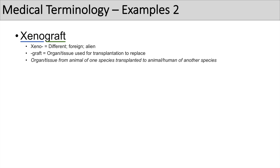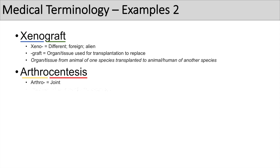Xenograft is just one type of graft. An autograft is when you transplant tissue from the same person, and an allograft is when you transplant tissue from one person to another person. The next word is arthrocentesis. Breaking it down: 'arthro' means joint, and 'centesis' means removal of fluid or aspiration. So arthrocentesis means removal or aspiration of fluid from a joint.